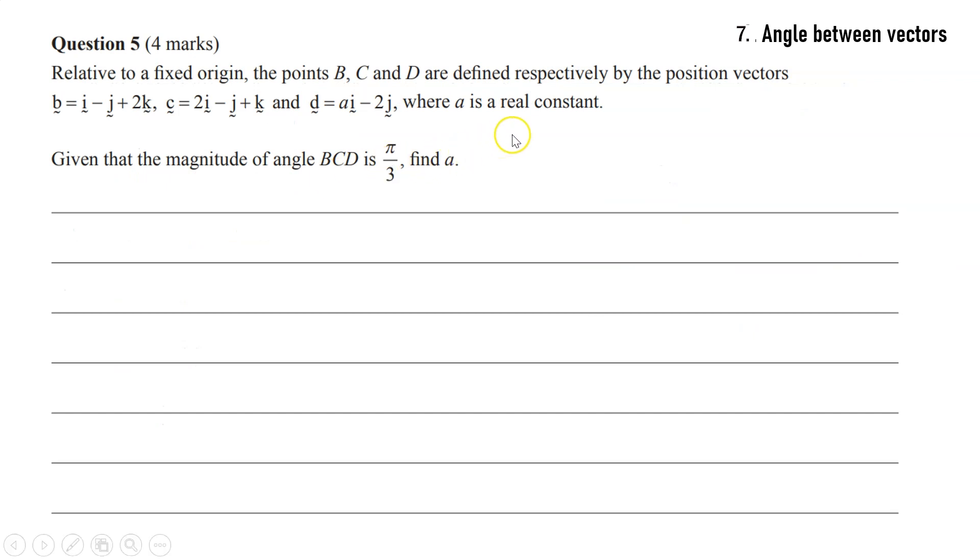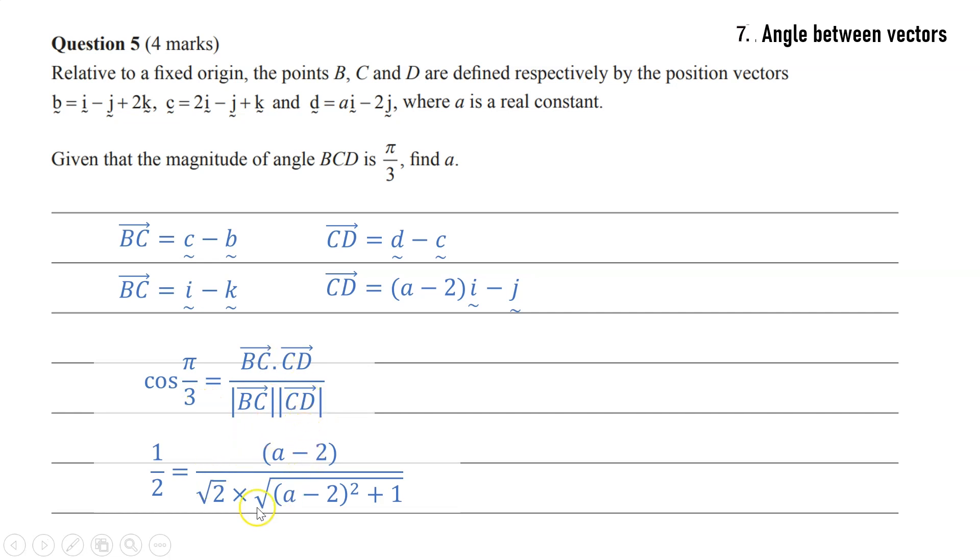In this vectors question, we're given three position vectors. We're given the magnitude of angle BCD, and we need to find this unknown constant a. So if we go ahead and start getting vectors BC as c minus b and CD as d minus c, we can work those out. And then we know that a scalar product can be used to give the angle. If we set up a scalar product formula, which is on our formula sheet, we've got a dot product over a product of magnitudes, and then we work those out and that should give us an equation to solve for a.